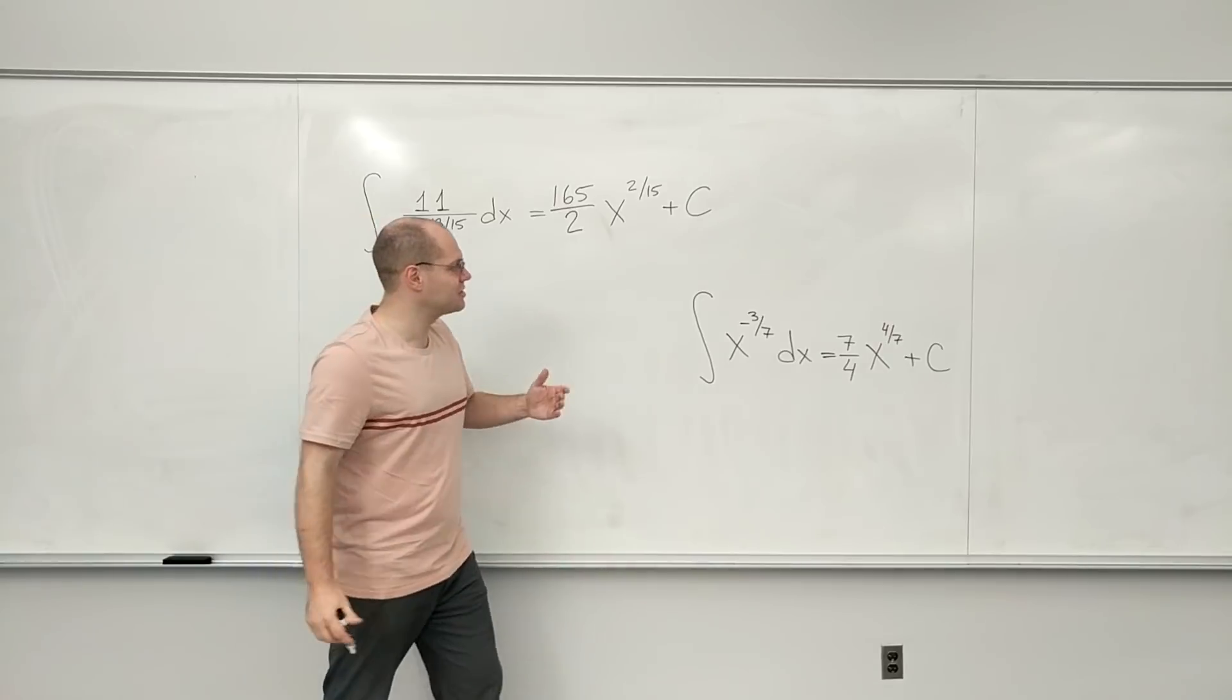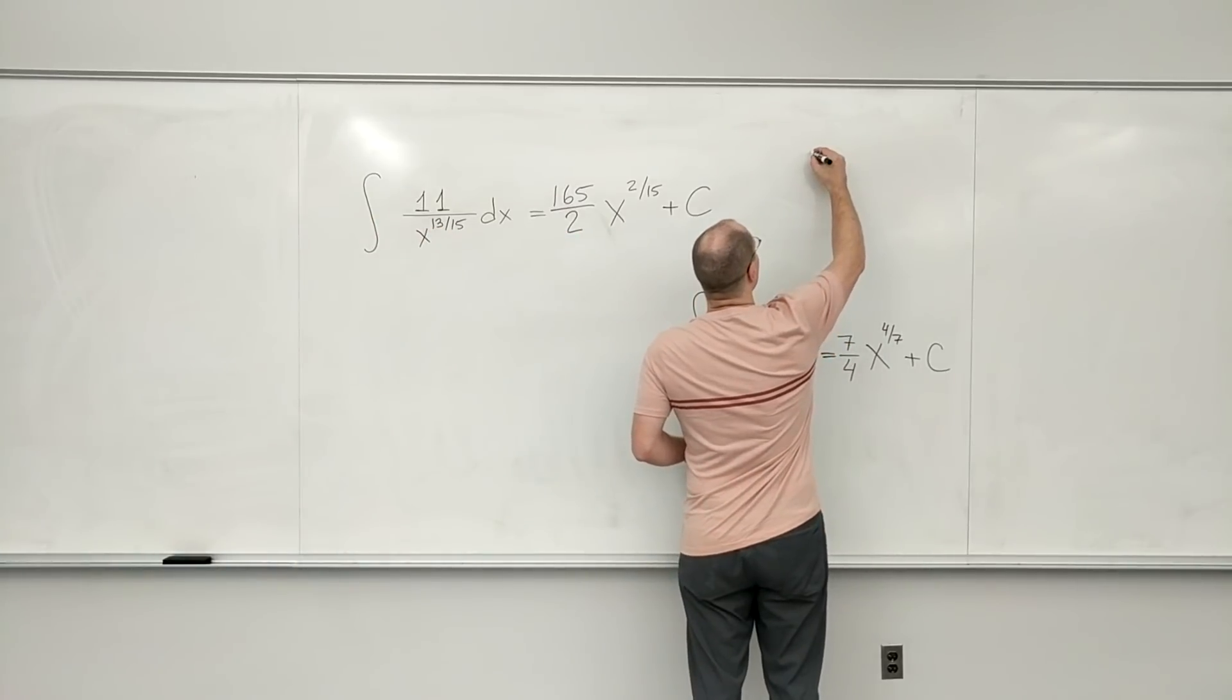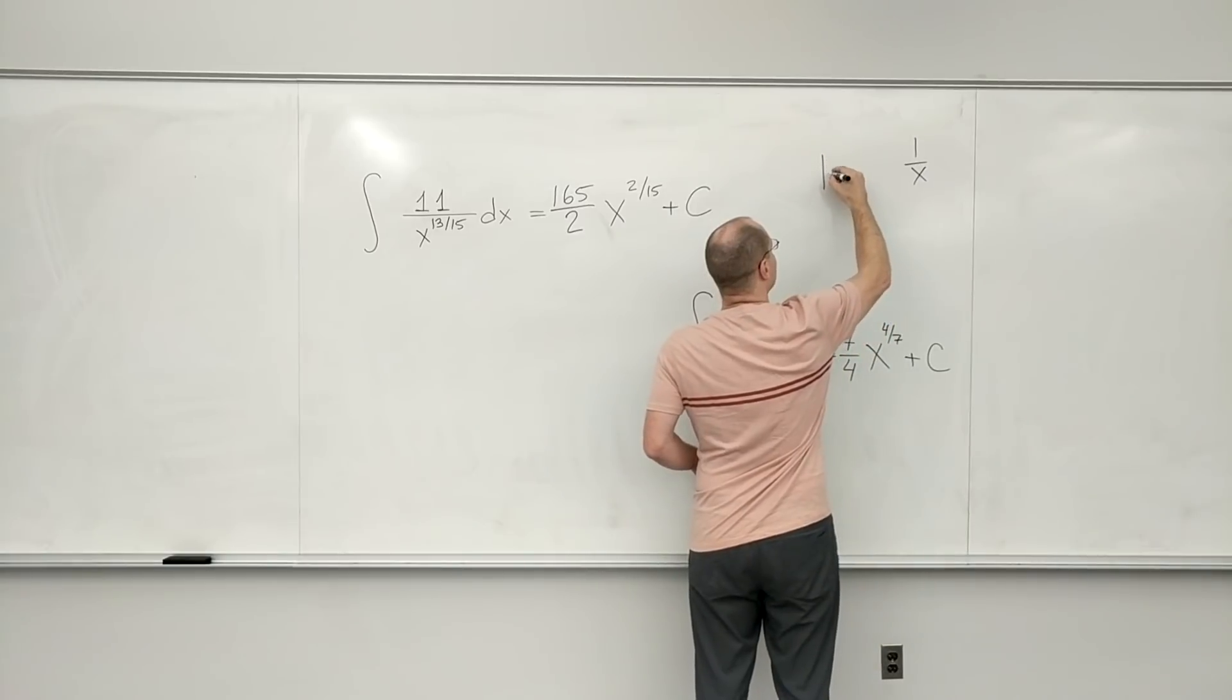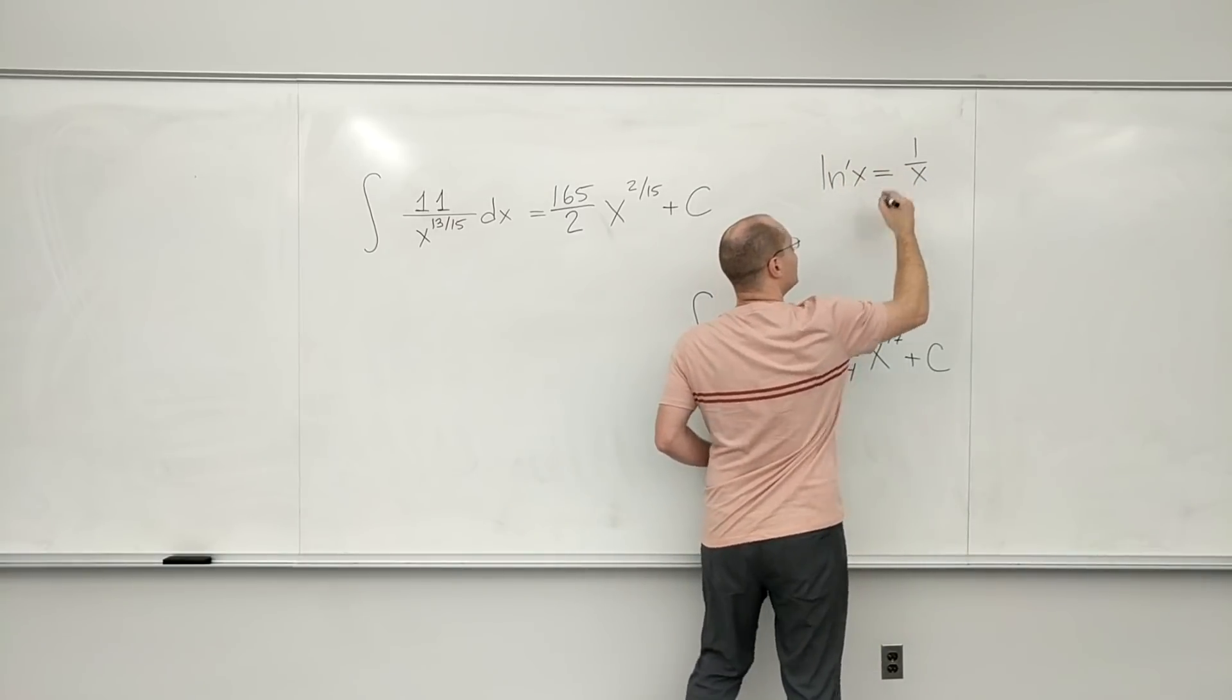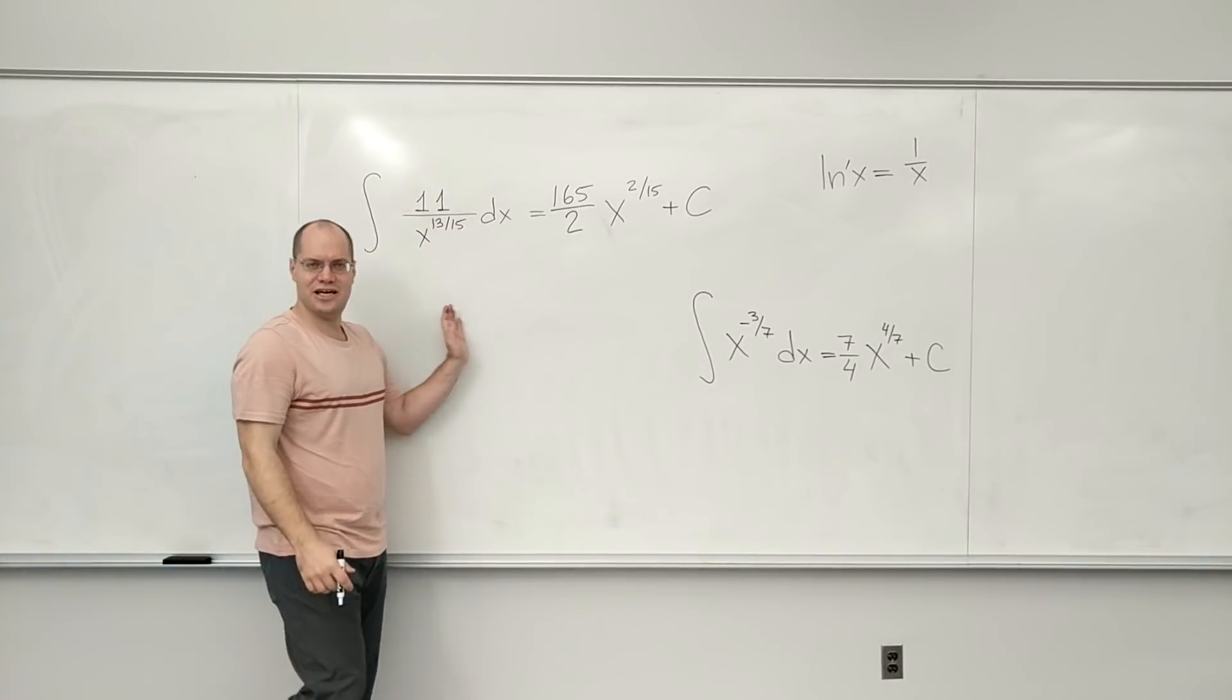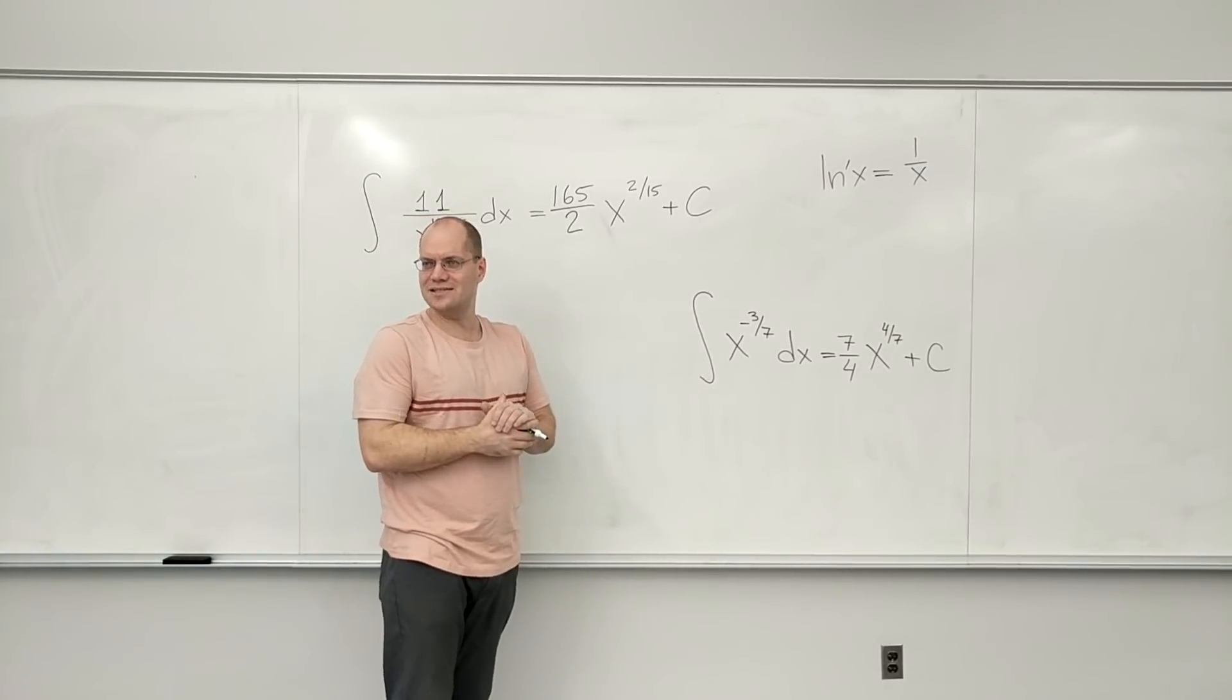Surprisingly, I'm still surprised by it. 1 over X comes from log. It's the derivative of natural log. So when you see 1 over X, that changes the whole ballgame. That's different.